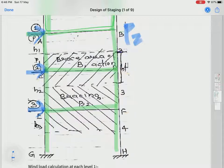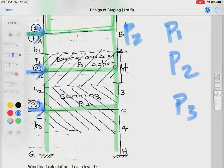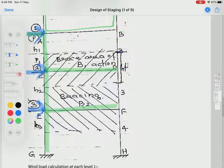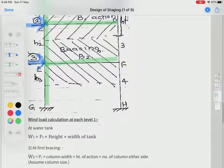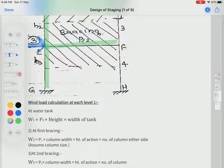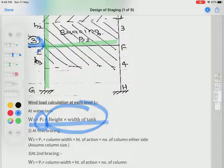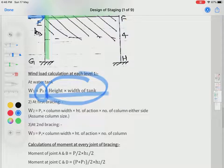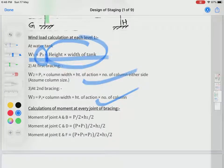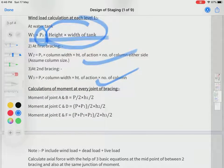We can calculate P1, P2, P3—Pz at height one, Pz at height two, Pz at height three. Then correspondingly we can get wind loads W1, W2, W3. How do we get it? W1 is wind load at height one, equal to pressure times area. Area is height of the tank into width of the tank. Similarly, we can calculate W2 and W3.